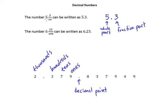Go back up here to this mixed number. 5 and 3 tenths was written as 5.3. Right here, this is said as 3 tenths. So the first digit to the right of the decimal point is called the tenths place.